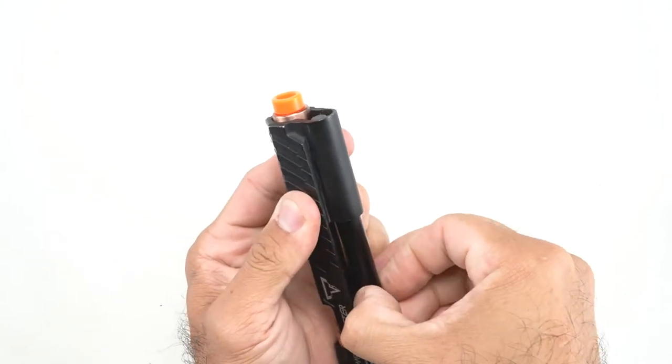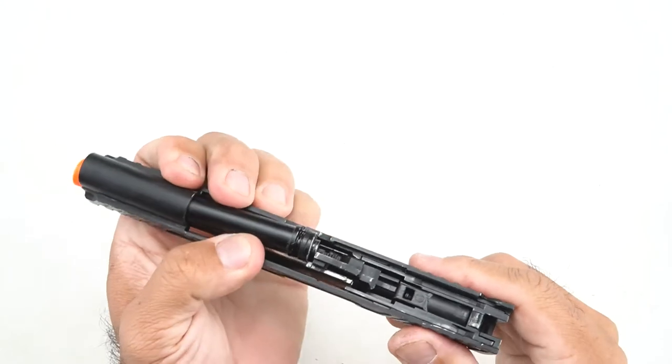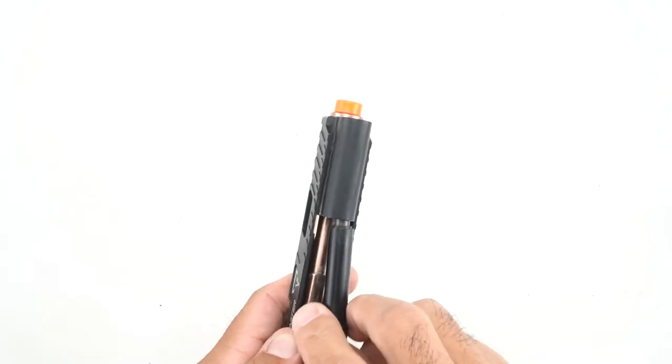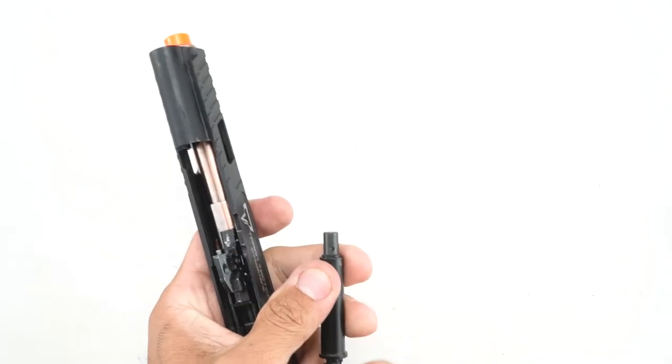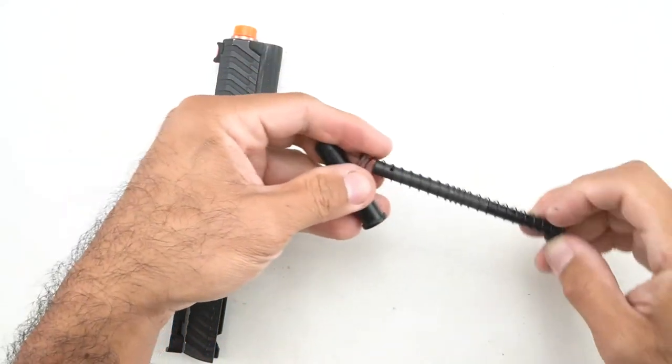So you're going to have to find a way to depress it a little bit. And then you're going to compress the spring and then very carefully angle the whole guide rod out. Be careful that it doesn't come flying out of your hands. These parts are spring loaded, so things do have a tendency to shoot out of your hand.